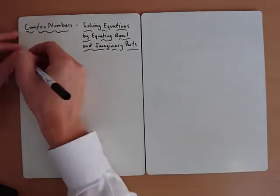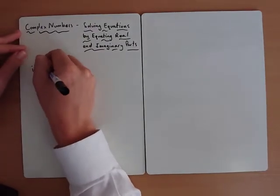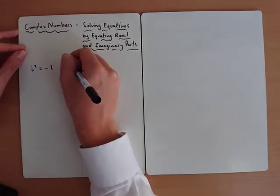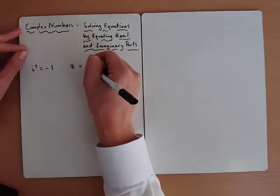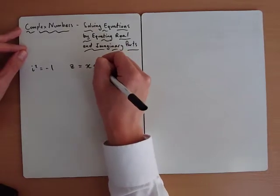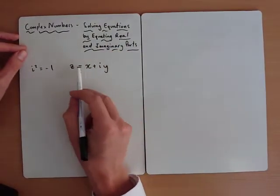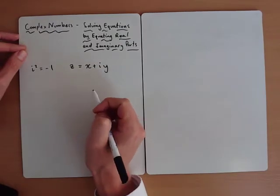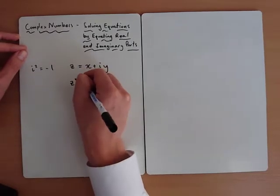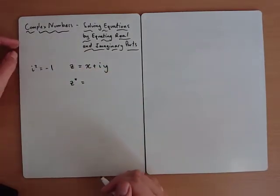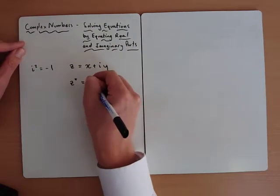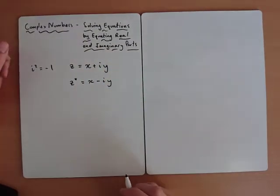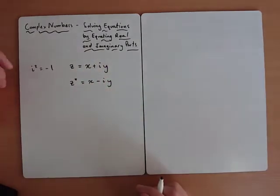Just to be clear on a few things: we know that i squared is equal to minus 1. We use the letter Z to stand for a complex number, and we can say Z is equal to x plus iy, where that's your real part and that's your imaginary part. If we use the star notation, that stands for the conjugate. If Z is x plus iy, then the conjugate Z* would be x minus iy — the real part stays the same and the imaginary part changes sign.